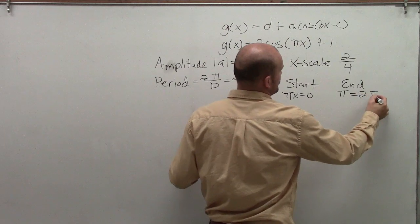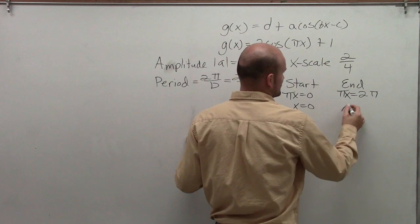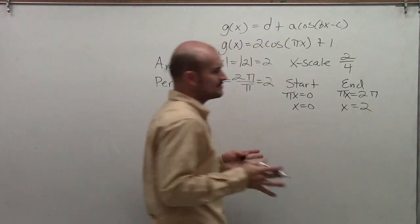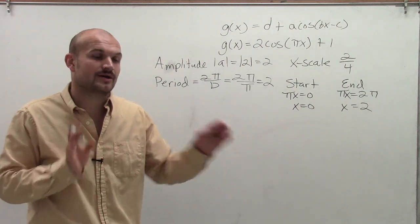So by solving for x, I get x equals 0 and then x equals 2. So that means my graph is now going to start at 0 and end at 2 for our first initial period.